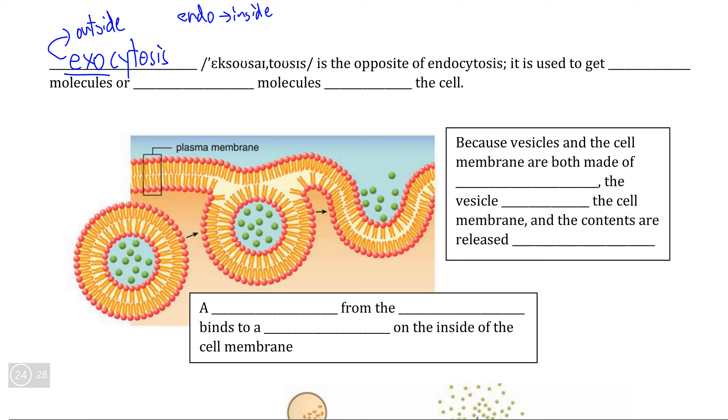So logically, we can assume that exocytosis is the opposite process of endocytosis—that being the process that the cell uses in order to get very large molecules or, as with endocytosis, many smaller but polar molecules outside of the cell.